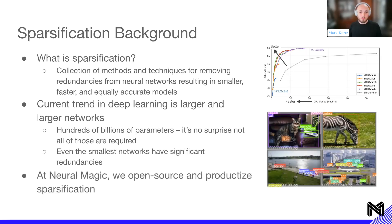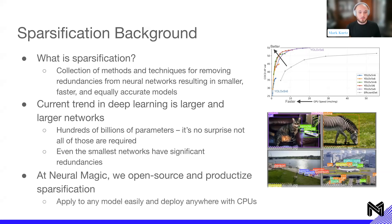At Neural Magic, we open source and productize sparsification to make it as easy as possible for you to apply it to any model and then deploy it anywhere with CPUs at GPU-class performance.